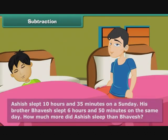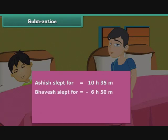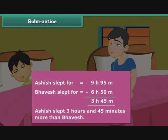Ashish slept for 10 hours and 35 minutes on a Sunday. His brother Bhavesh slept 6 hours and 50 minutes on the same day. How much more did Ashish sleep than Bhavesh? We cannot subtract 50 from 35, so we borrow an hour. We add 60 minutes and subtract 1 from hours. Now we can perform the subtraction. Therefore, Ashish slept 3 hours and 45 minutes more than Bhavesh.